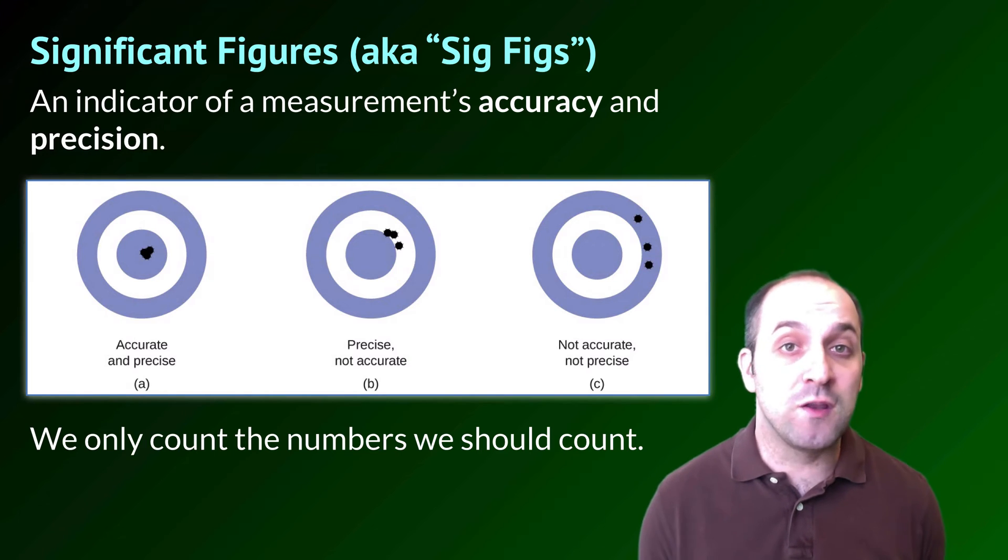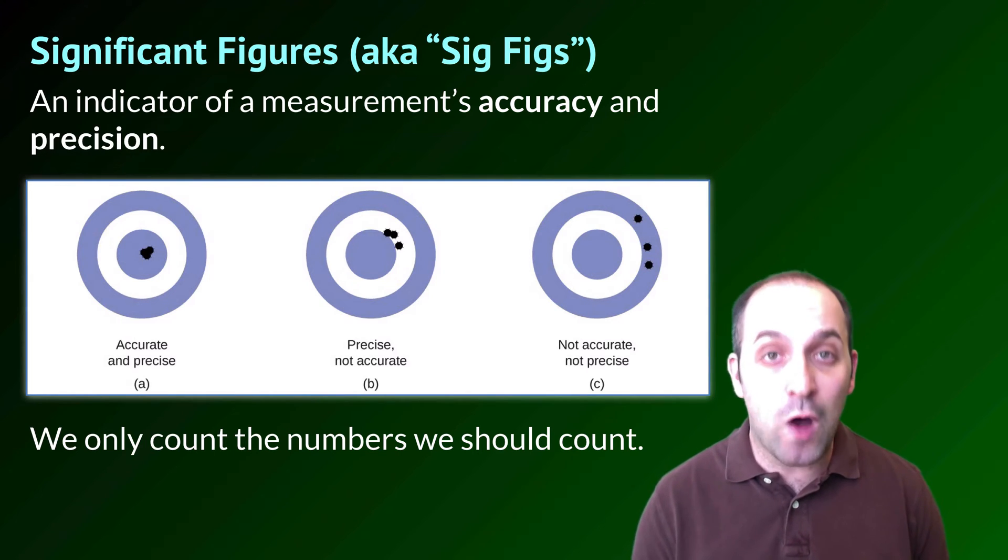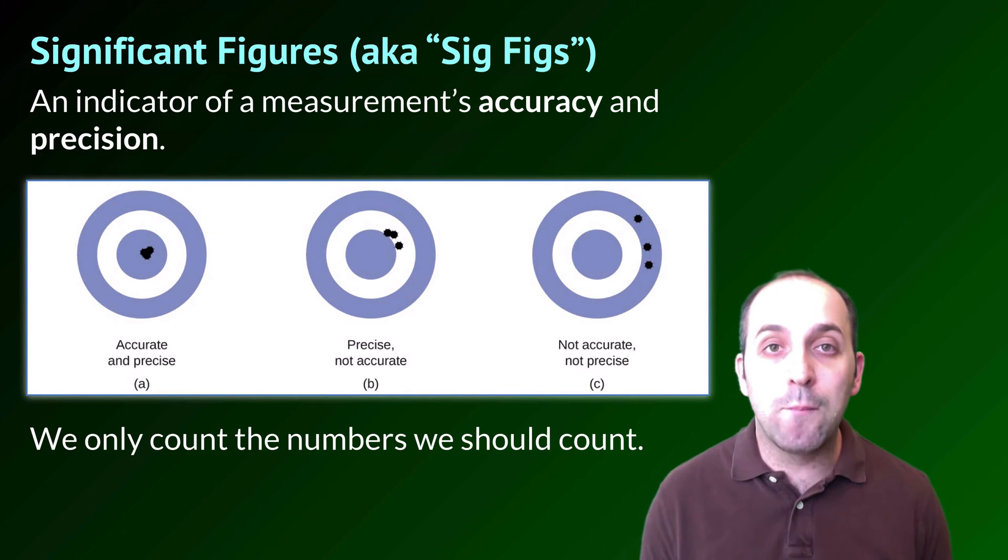When we're making measurements, we want to be as precise as we possibly can be, and we want to be accurate in our measurements. But we can only count the numbers that we should count. We're limited by the precision of our measuring device. So let's take a look at how we actually should make our measurements in the laboratory.